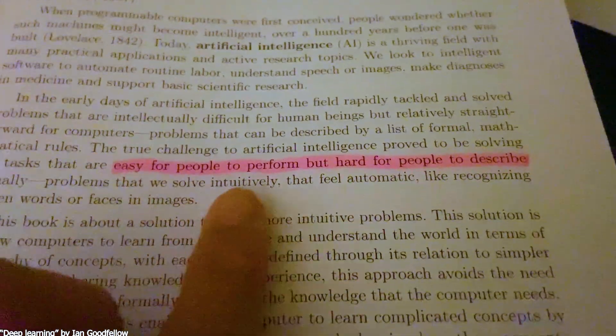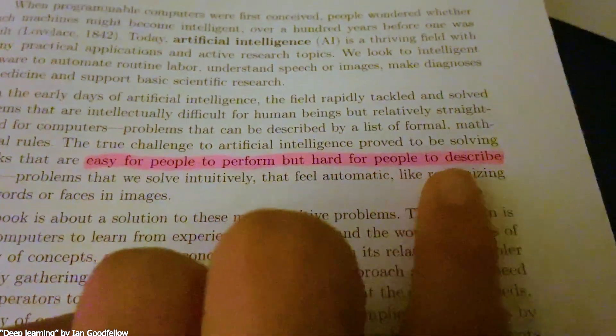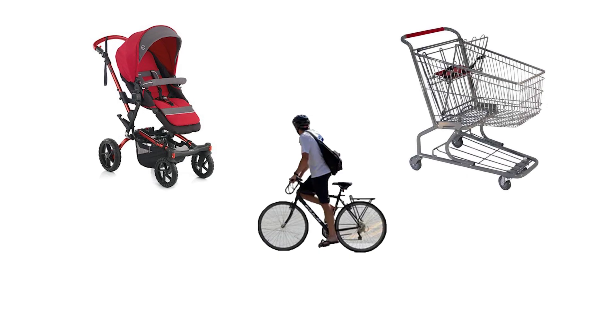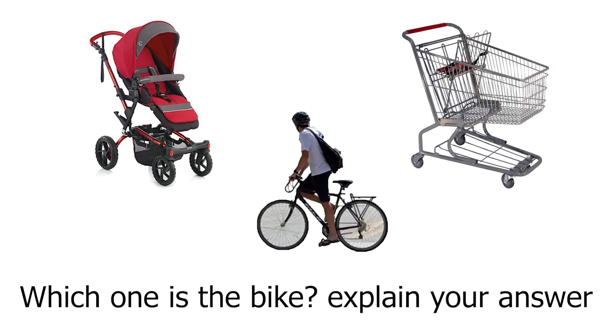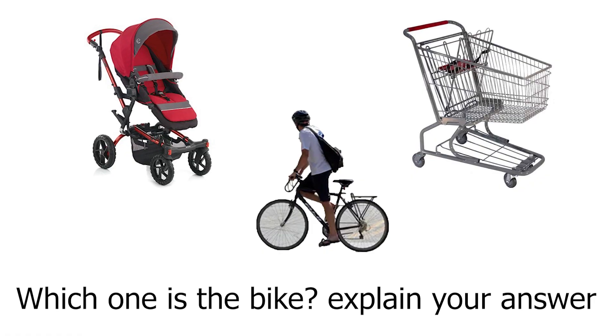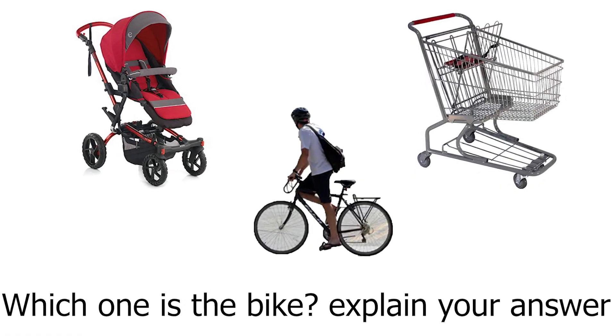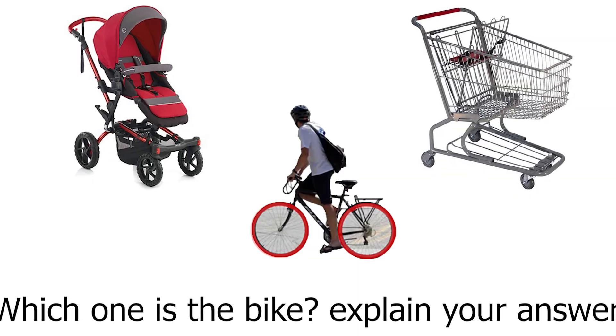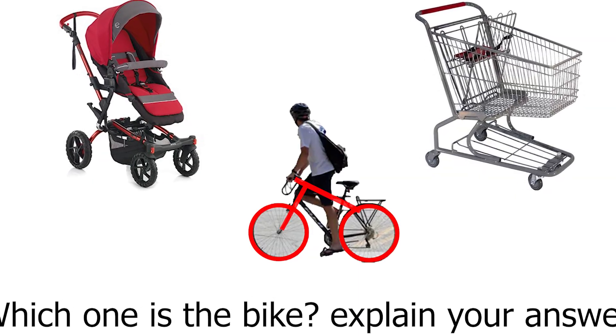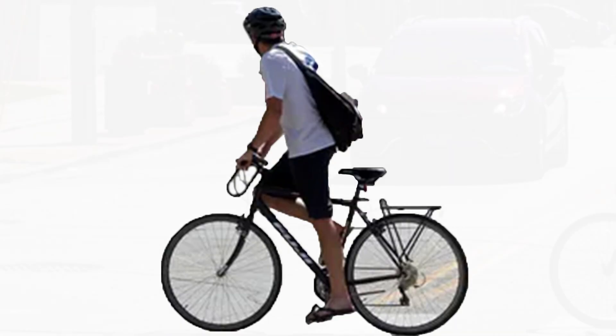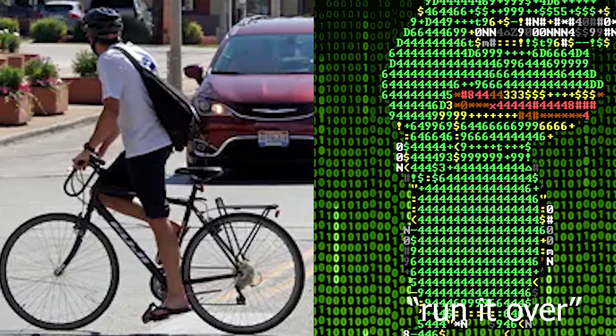In deep learning, there's this quote I like that says the most difficult problems in AI are those that are easy for people to perform, but hard for people to describe. If you look at the objects in this image, just try to explain in real English words how you are able to identify each object. There's no text or labels — we're just able to intuitively recognize the patterns. So explaining all this to a computer in ones and zeros is quite a difficult challenge.